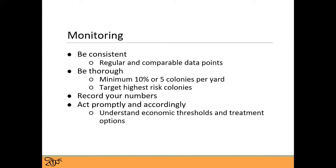Really be thinking about targeting those higher risk colonies. We always have those wonderful colonies that are booming and full of bees and really growing a lot of brood. Those are the ones we want to target to make sure we are understanding the varroa population in those really growing populations. And always write your numbers down. It seems like you'll remember, but you won't — was it two? Was it one? Was it a hundred? You probably won't remember. So it is best to record it.